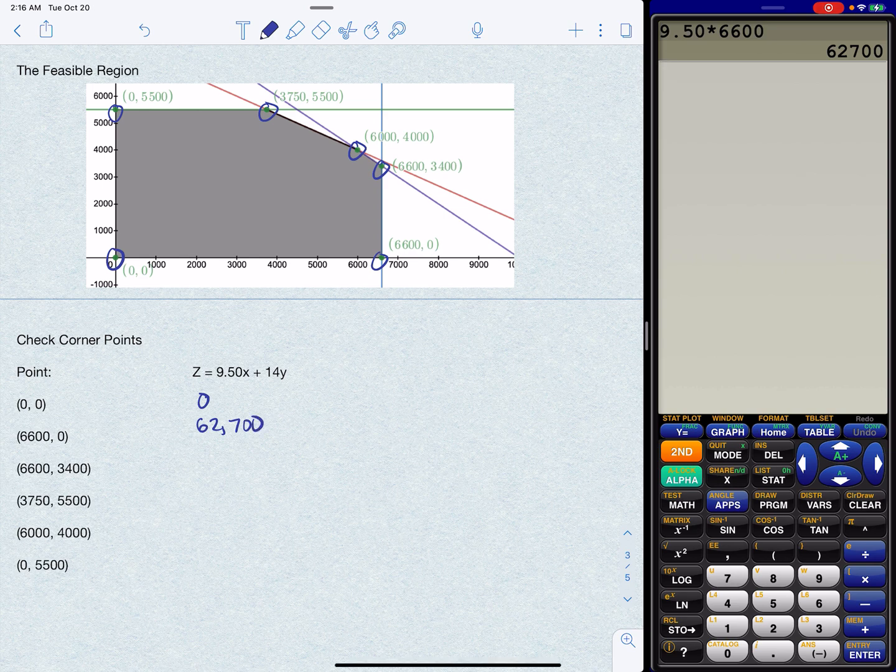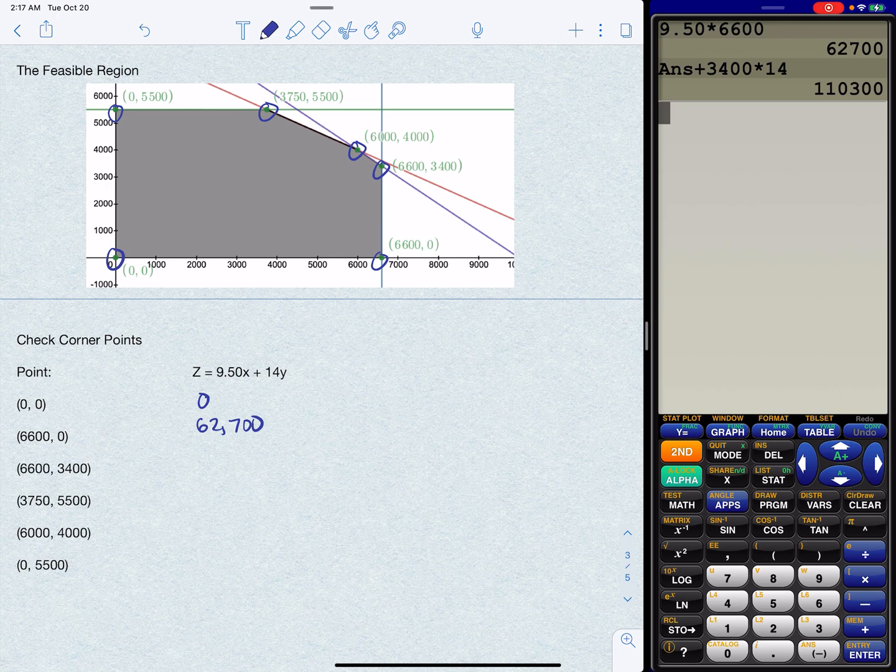Now, looking here at 6,600, 3,400, I know that's going to be a bigger result because I'm making more stuff, right? I'm also making, I'm making 6,600 trucks, but I'm also now making more, which is going to give me more profit. So I'm just going to take the previous answer and add 3,400 times 14. And that's 110,300.